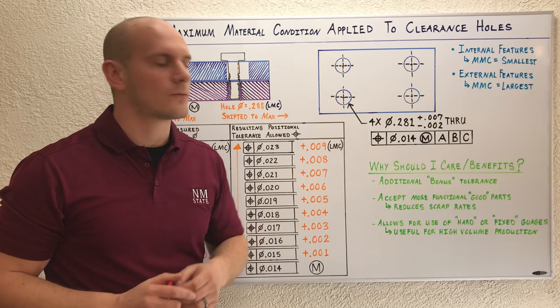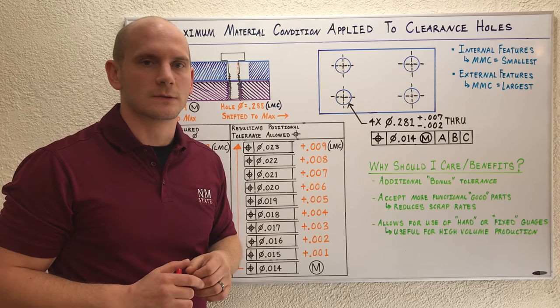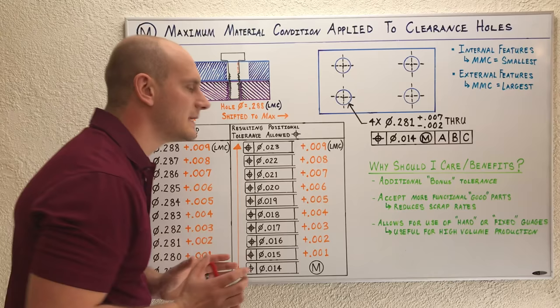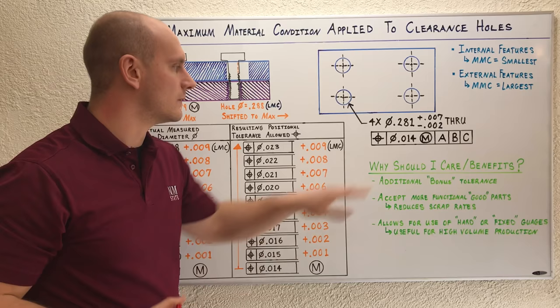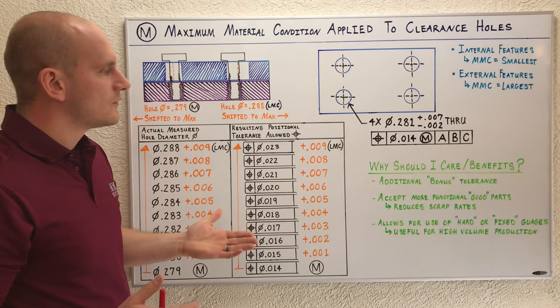There's actually several significant benefits to invoking MMC when you're trying to control clearance holes. The first benefit is you get to use that additional bonus tolerance and give that back to the machinist. Especially if this is a really tight tolerance, you want to find a situation where you can give the machinist as much tolerance as possible.